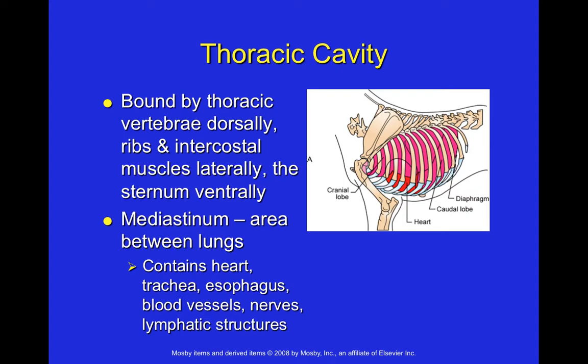The thoracic cavity is bound by the thoracic vertebrae dorsally, the ribs and intercostal muscles laterally, and the sternum ventrally. The mediastinum is the area — the gap between the two lungs — and it contains the heart, trachea, esophagus, blood vessels, nerves, and lymphatic structures. In this diagram, you can identify the cranial lobe and caudal lobe of the lung, with the heart and trachea sitting in the mediastinum.